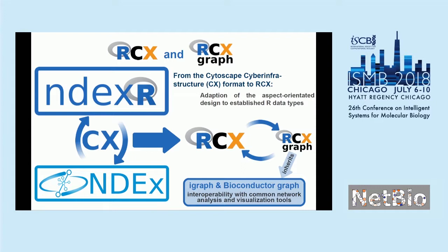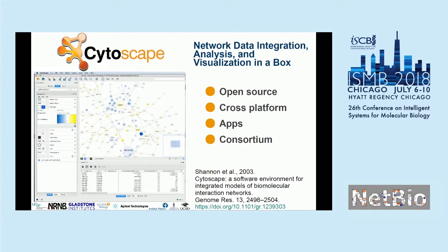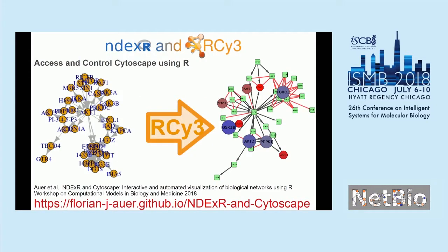Speaking of visualization, you most likely know Cytoscape already — maybe before the conference, from one of the tutorials, or right now. It's an open source cross-platform software for visualizing networks. It's pretty neat, has a lot of apps which can extend the functionality, and is backed by a lot of institutes. It also offers a REST API and R packages. Alex spent a lot of work recently on the RCY3 package, which makes it really easy to visualize your networks using Cytoscape remotely from R.